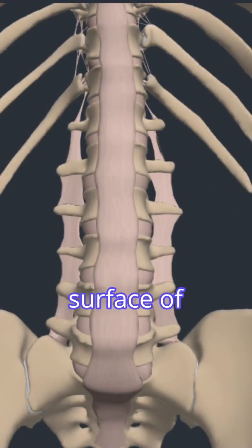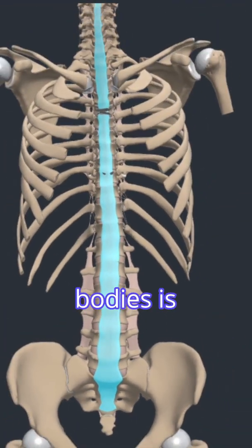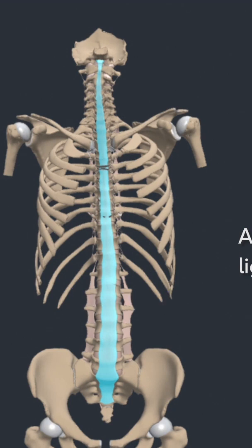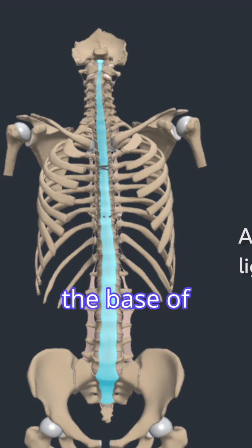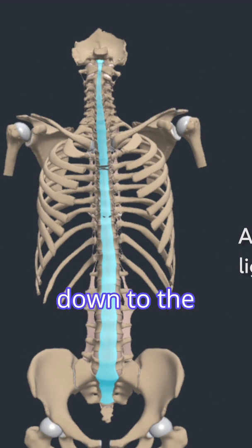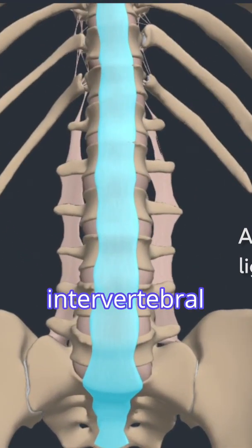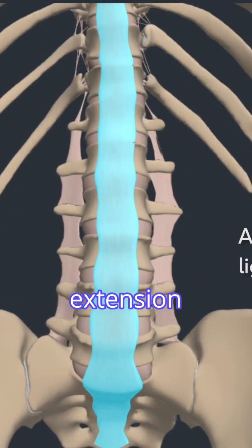On the anterior surface of the vertebral bodies is the anterior longitudinal ligament. This ligament starts at the base of the skull and runs down to the sacrum. It reinforces the intervertebral disc and limits extension of the spine.